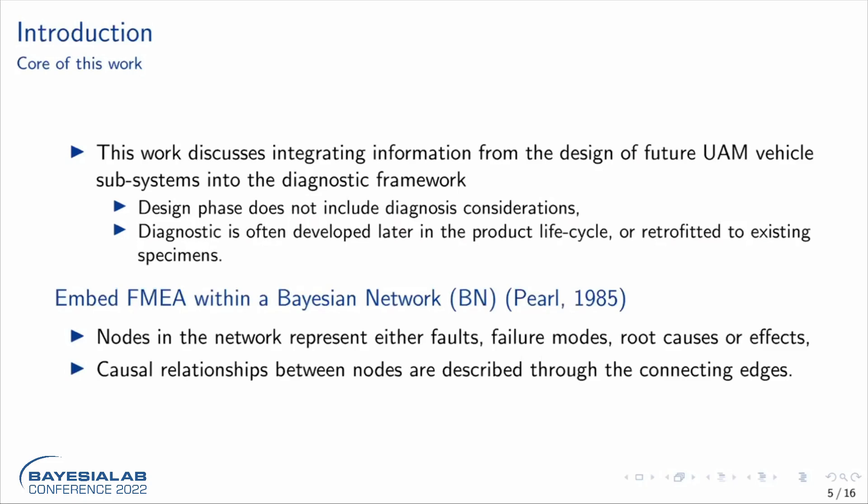What we are trying to do is integrate information from the design phase and get it back into the framework. How do you embed an FMEA with a Bayesian network? We take the information and represent nodes in the network based on where the sensors are placed. Each sensor is defined as a node with a failure node and a root cause and effect. We can then chart the whole structure of the vehicle or subsystem and develop causal relationships between the nodes through connecting edges.